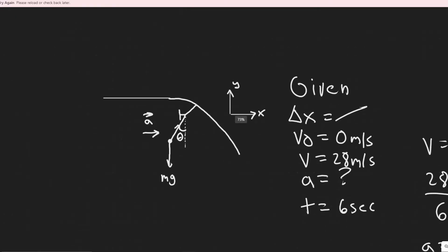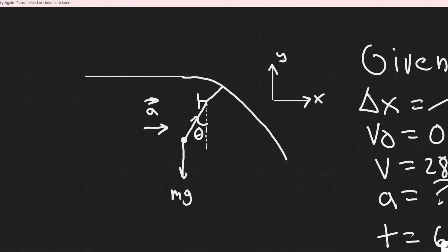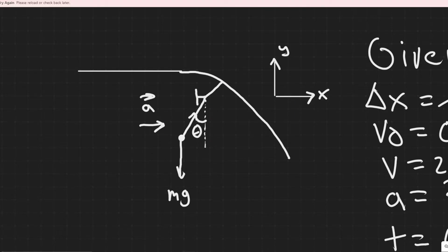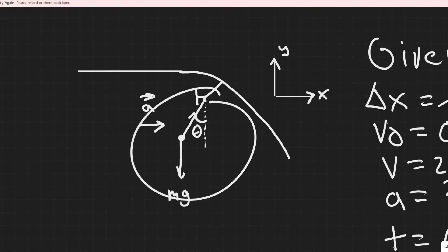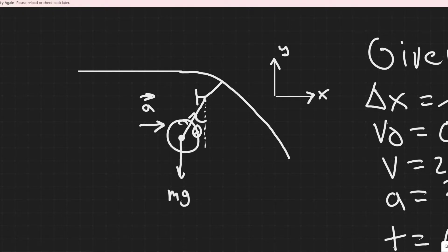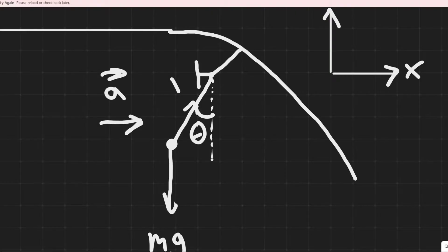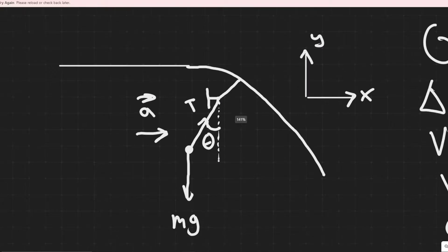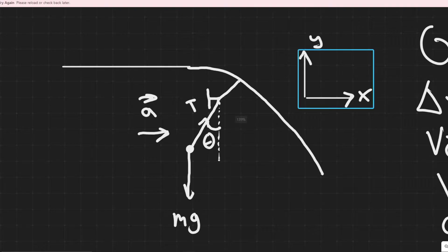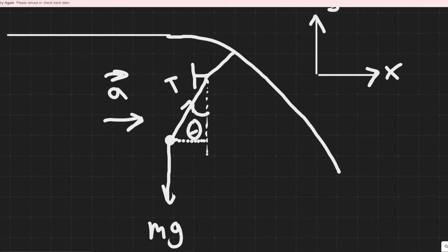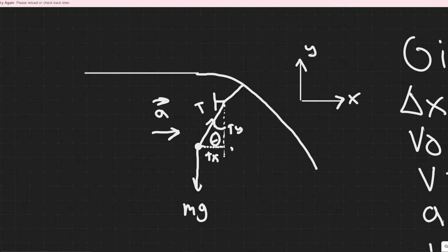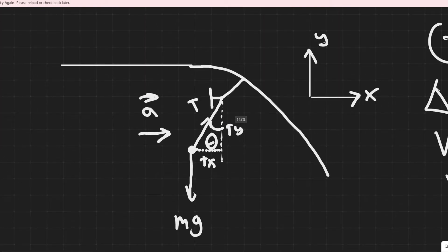Now we're going to solve for the angle by summing the forces, but first we need to draw the free body diagram. This dot represents our object. It has a gravitational force mg pulling straight down, and tension in the string at angle theta holding it upward. I'll split the tension into two components relative to our x and y axes: t sub x in the x direction and t sub y in the y direction.